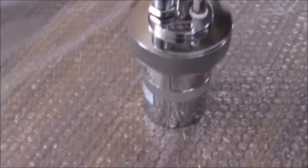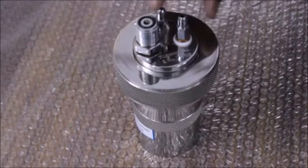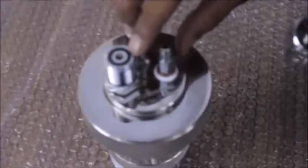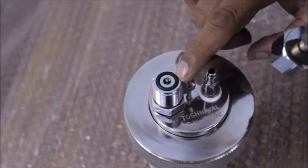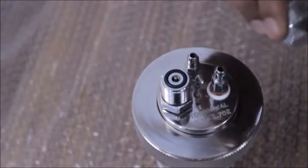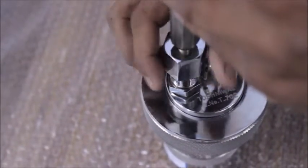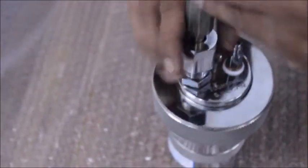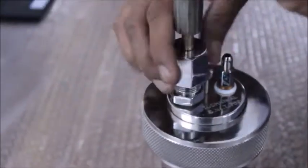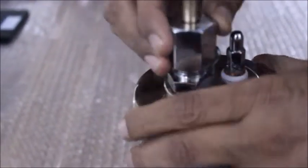This is the assembled combustion bomb. We will now connect the oxygen gas pipe to the non-release valve. Make sure that the connection is hand tight.